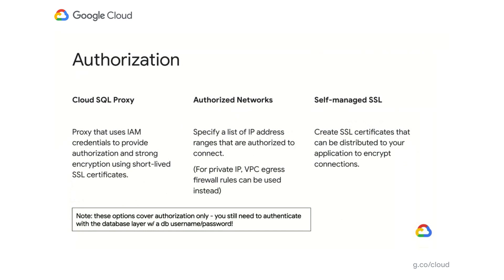Once you've decided how to connect, the next step is authorization. There are three different options. The first is the Cloud SQL proxy — a binary that provides IAM authentication. It uses a service account to provide authorization and strong encryption using short-lived SSL certificates. The second option is authorized networks, where you specify a list of IP addresses authorized to connect. For private IP, there's a similar feature called VPC egress firewall rules. The third option is self-managed SSL, where you create SSL certificates for your instance distributed to your application to encrypt connections. For MySQL and Postgres, this is a client and server-side credential, while for SQL Server, this is only a server-side credential.